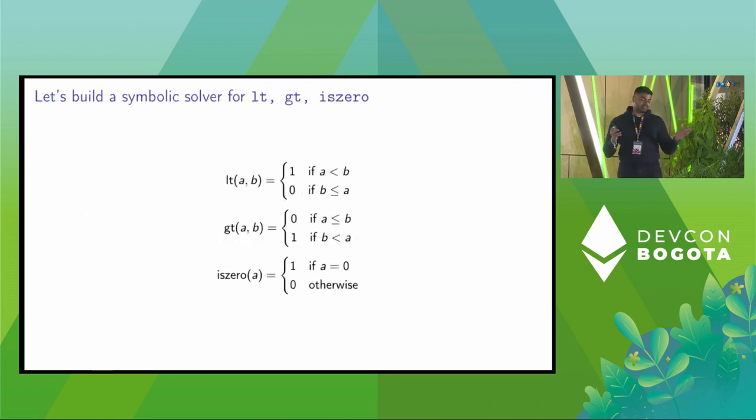Perhaps here is an easier set of instructions: less than, greater than, and is zero. Here's a formula representation of these opcodes. We define when these values take 1 or 0. For less than AB, if A is less than B, the opcode gives 1. In the other case, it gives 0. Almost the opposite for greater than. For is zero, if the value is 0, then you get 1 and 0 otherwise. So let's digress for a bit and talk about difference logic.